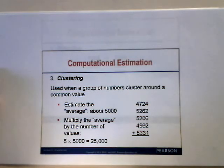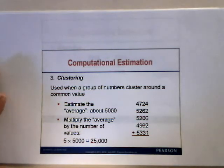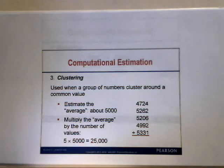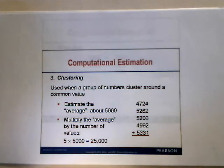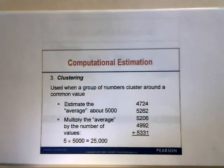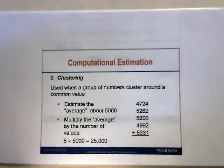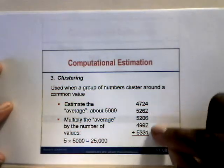Clustering is another computational estimation method, used when numbers cluster around a common value. For 4,724 plus 5,262 plus 5,206 plus 4,992 plus 5,331, the values cluster around 5,000. Since there are five numbers, multiply 5 times 5,000 to get approximately 25,000 as the estimated sum.